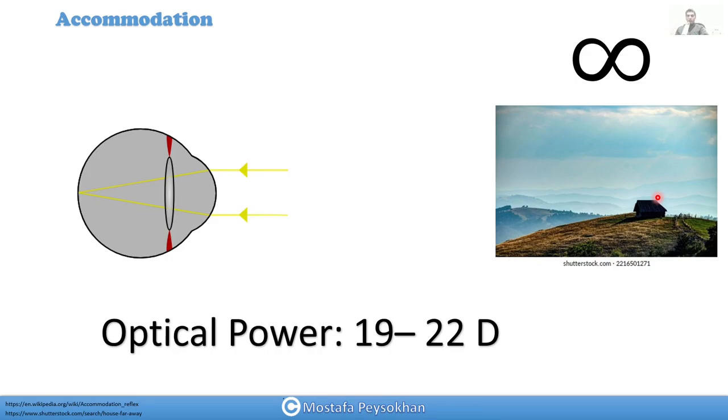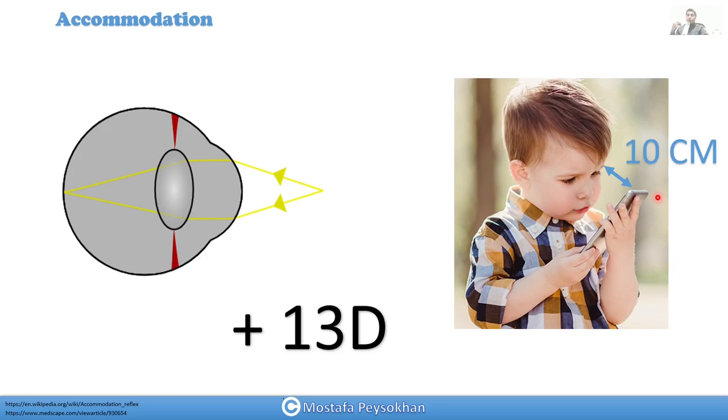Then when you are looking at an object that is about 10 centimeters from your eyes, like these kids looking at the cell phone, which is not a good thing because you put a lot of pressure on your eye, which is 10 centimeters from your eyes, the total power of your lens increases by 13 diopters. So that's the amount of change from far to very close, about 10 centimeters to your face.